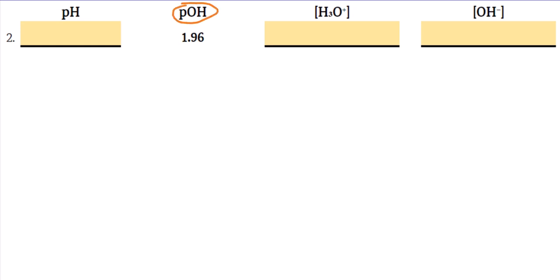When pOH is provided, you'll be able to solve for pH in one step. You'll also be able to solve for the concentration of hydroxide ions in one step. To solve for pH, take 14 and subtract the pOH.